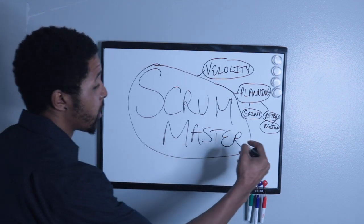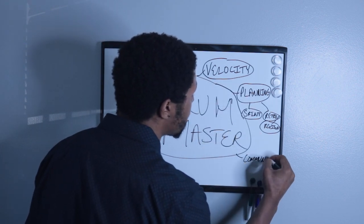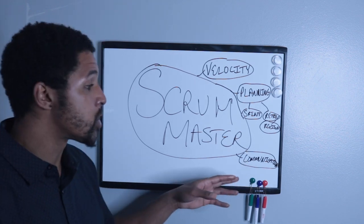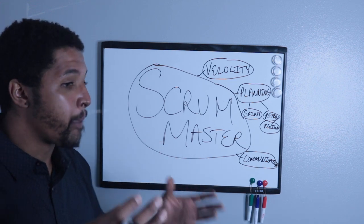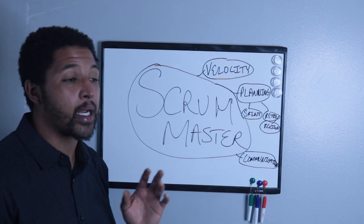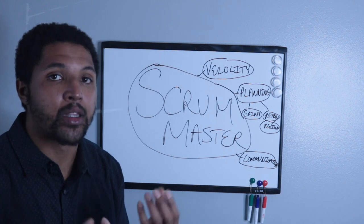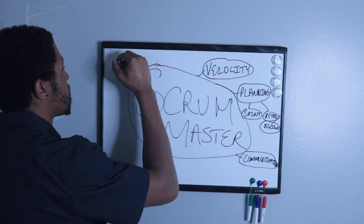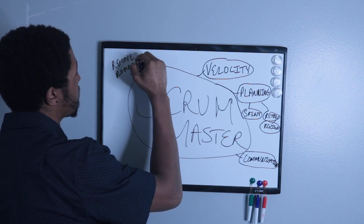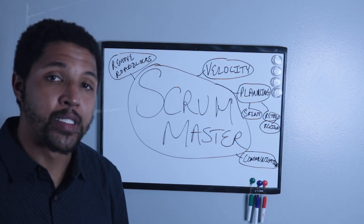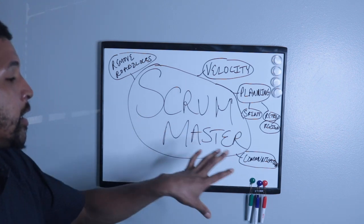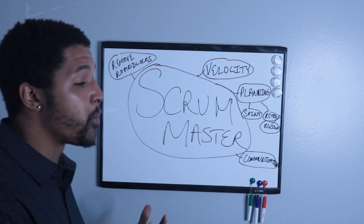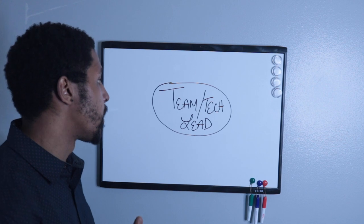Communication is a key skill for the Scrum Master because they have to be in touch with everybody on the team — developers, QAs, and BAs — but also with the business. There's a lot of back and forth; they're kind of doing dual responsibilities, handling tech stuff while also talking to the business. They're like the heart of the team. Another thing they do is remove roadblocks: if there are meetings that need to happen with the business or people a technical person isn't familiar with, the Scrum Master helps you remove that roadblock, gets you the resources you need, and keeps you moving.